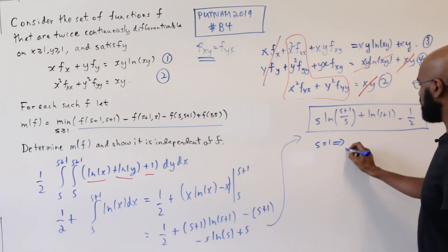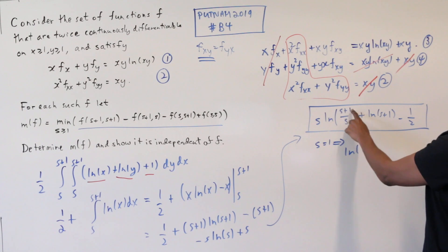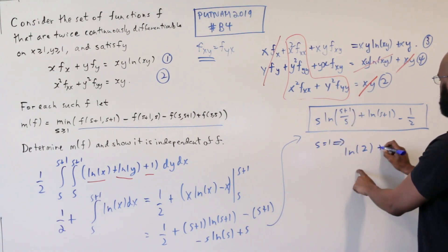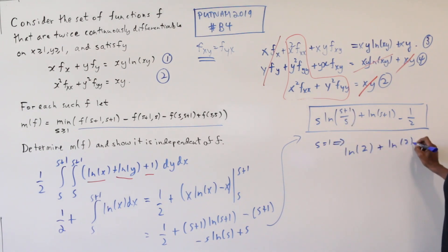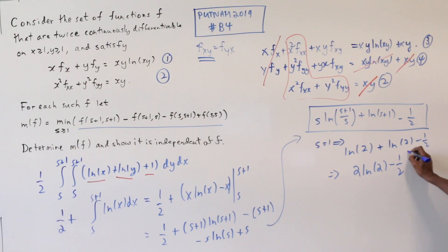If we plug that in, we get ln of 2 plus ln of 2 minus 1 half, which gives us a minimum of 2 ln(2) minus 1/2.